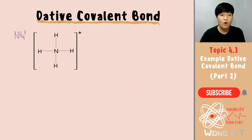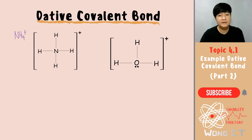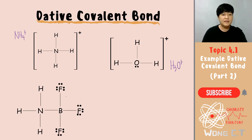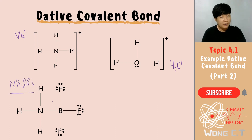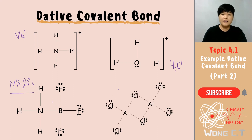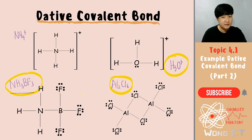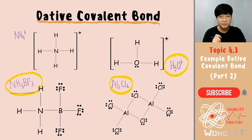So NH4+ is the example I just showed you. We have a few more compounds that hold dative covalent bonds. For example, your H3O+ also has a dative covalent bond. Next, your NH3BF3 also has a dative covalent bond. Next, you have your Al2Cl6 also having a dative covalent bond. We will look at the discussion for H3O+, NH3BF3, and also Al2Cl6 to identify which bond is the dative covalent bond.